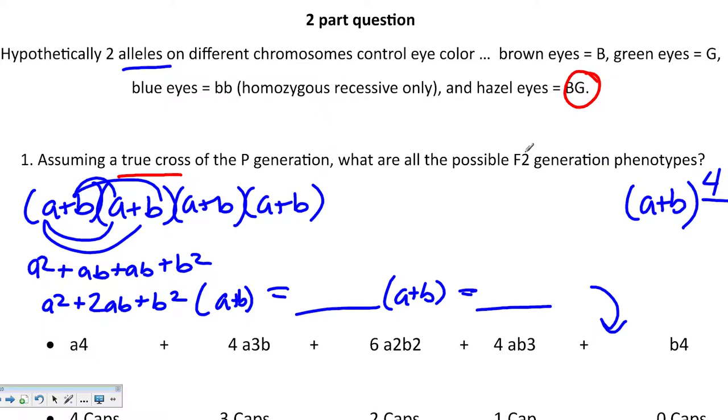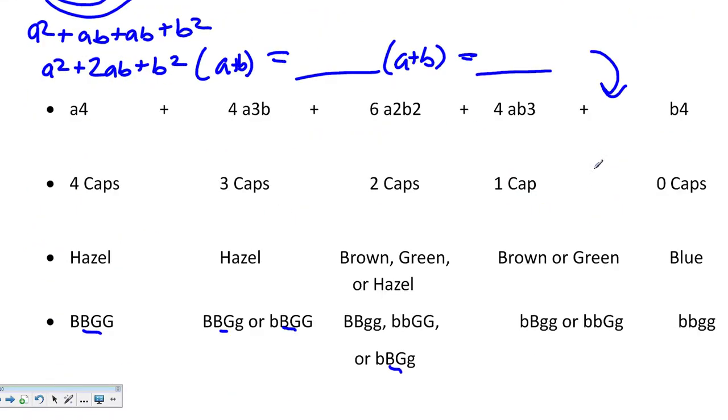Our initial question was, assuming the true cross, what are the possible F2 generation phenotypes? We know that we can have one, five, eleven with hazel eyes. We could have a possible ten with brown eyes, and we could have ten with green eyes. We could only have one with blue eyes, and that blue eyes is very rare because you have to have all recessive traits for it to happen. So those are your phenotypes. You go through, list out the genotype, which will give you the phenotype. That's using binomial expansion.